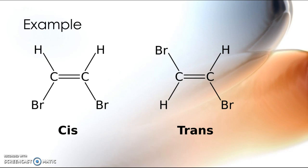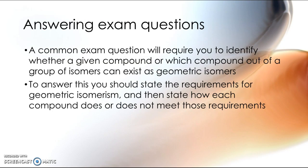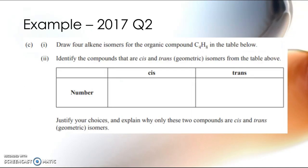When it comes to exam questions about geometric isomers — and the same applies to optical isomers — you will commonly be asked to identify whether a given compound can exist as geometric isomers, or which compound from a range will exist as cis-trans isomers. When answering these questions, think about the definition and how the molecule does or does not meet it. For example, this was a question from the 2017 exam.